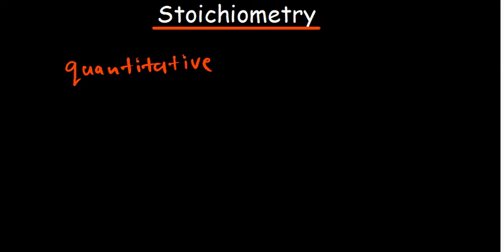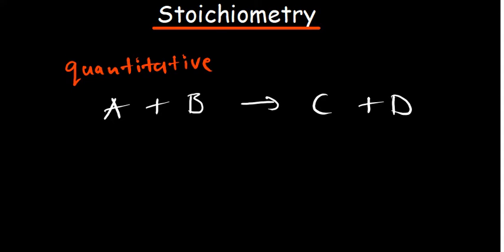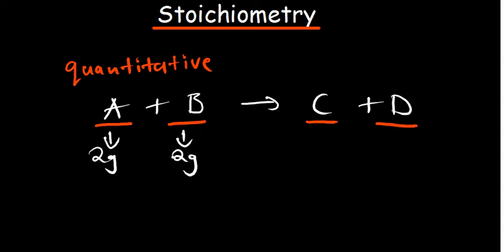To illustrate, assume we have two reactants A and B reacting to give us C and D. What we're trying to study under stoichiometry is basically the relationships between these reactants and also their products. So if you are given the masses of A and B, you should be able to find the masses of your products.